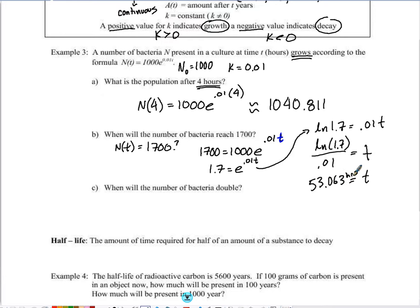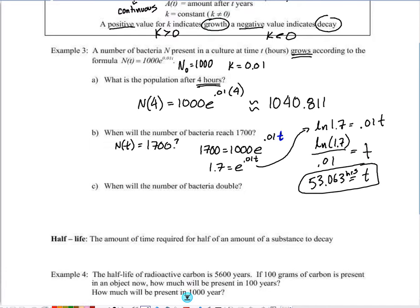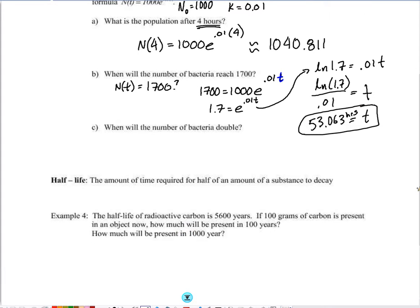To find when the bacteria doubles, we set the final amount equal to twice the initial value. Taking the natural log of both sides to remove the base e exponent, then dividing by 0.01, gives a doubling time of 69.315 hours.